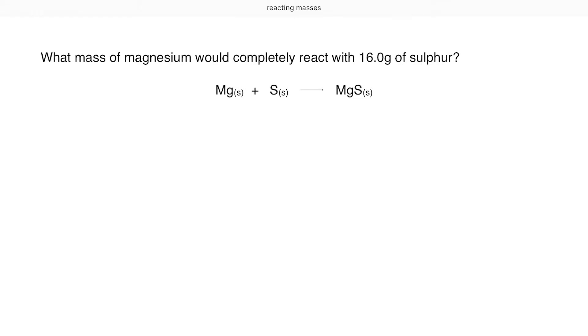The key to solving reacting mass calculations at A-level relies very simply on having a method that is foolproof. I'm going to show you what that method is now. I'm starting with a very simple GCSE style question here. What mass of magnesium would completely react with 16 grams of sulphur?